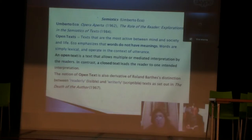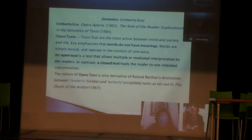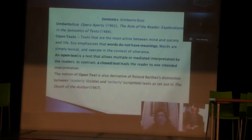Texts that are most active between mind and society and life are open texts. Eco emphasizes that words do not have meanings in themselves — words are simply lexical and operate in the context of utterance. He emphasizes the openness, the dynamic that exists between the readers and the texts themselves. There is no fixed meaning. If there is a fixed meaning, he calls it a closed text, which leads the reader to one intended interpretation only.